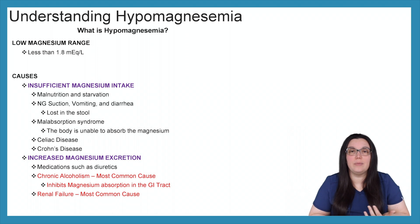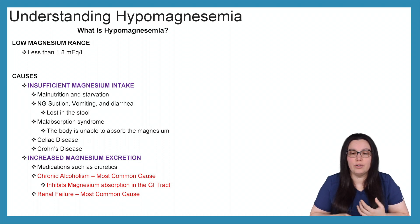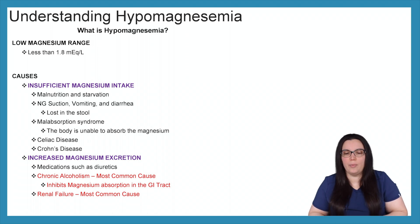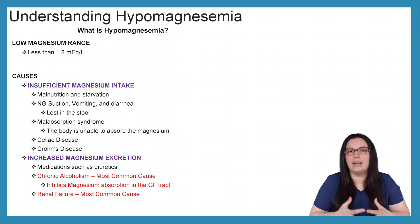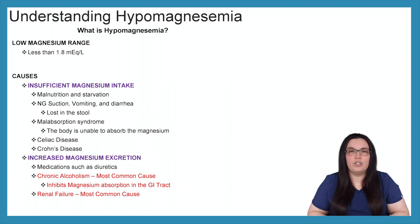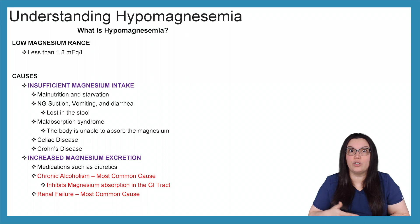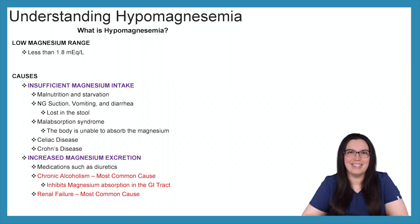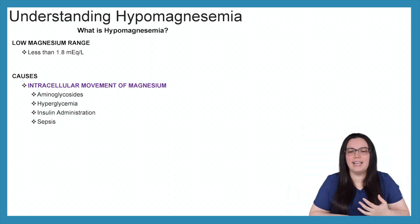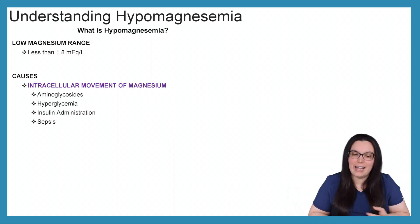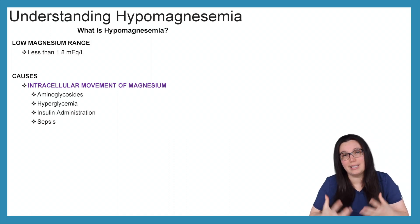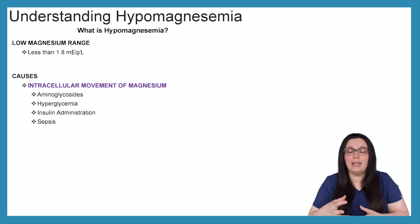Another category is increased magnesium excretion. Medications such as diuretics are electrolyte wasting and can decrease magnesium. Chronic alcoholism is the most common cause, as it inhibits the body's ability to reabsorb magnesium in the GI tract — so monitor serum electrolytes closely in those patients. Renal failure is also a major cause. The last category is intracellular movement of magnesium, where aminoglycosides, hyperglycemic states, insulin administration, and sepsis all play a major role in how magnesium is distributed.